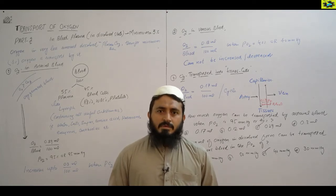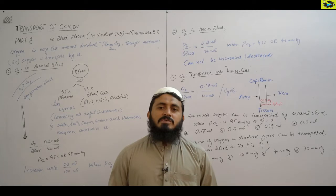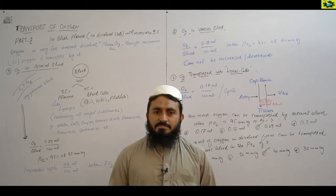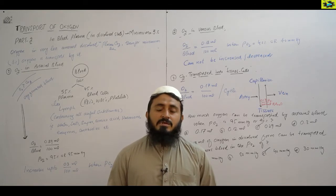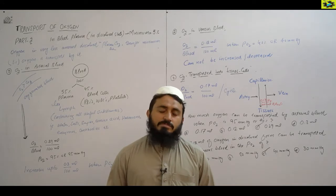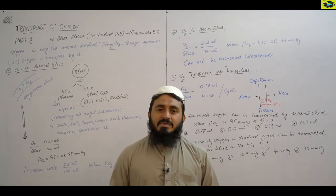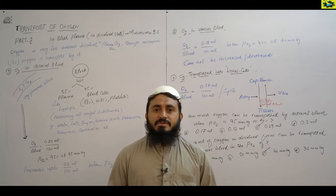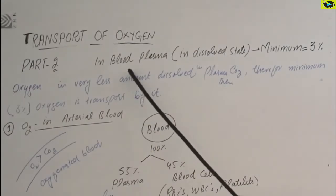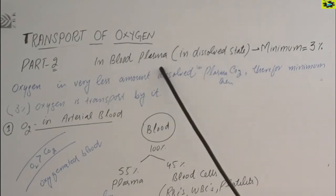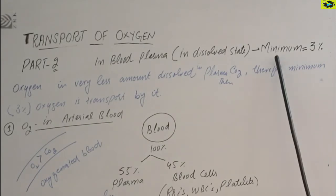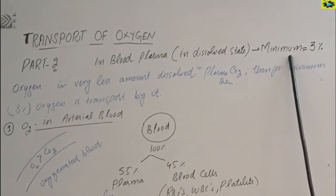Today we discuss the topic of transport of oxygen in dissolved state in the blood plasma. It is a minimum transport of oxygen, that is just 3% that takes place inside the blood plasma. It is about 3% and that can be considered as the minimum amount of our transportation.